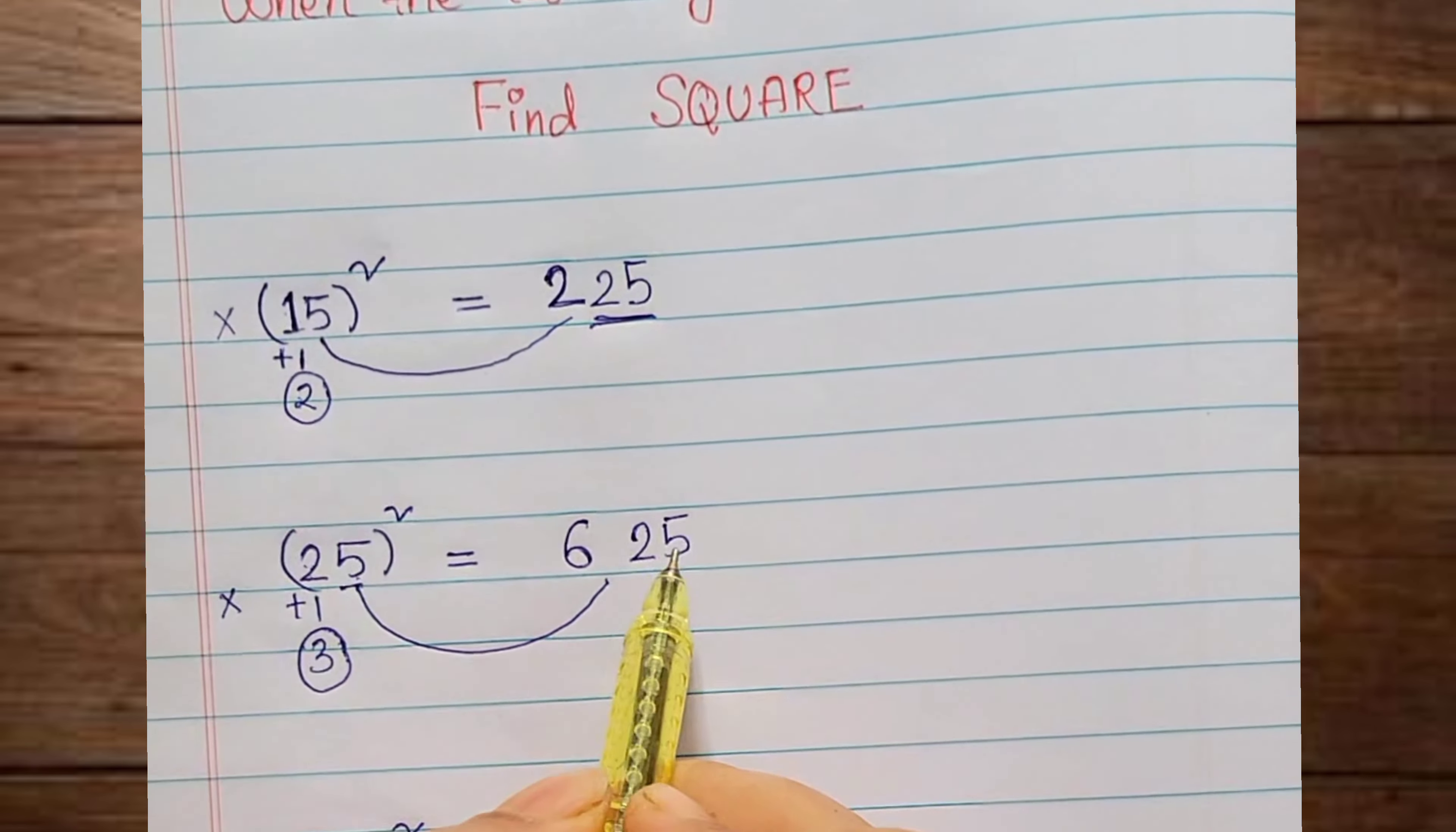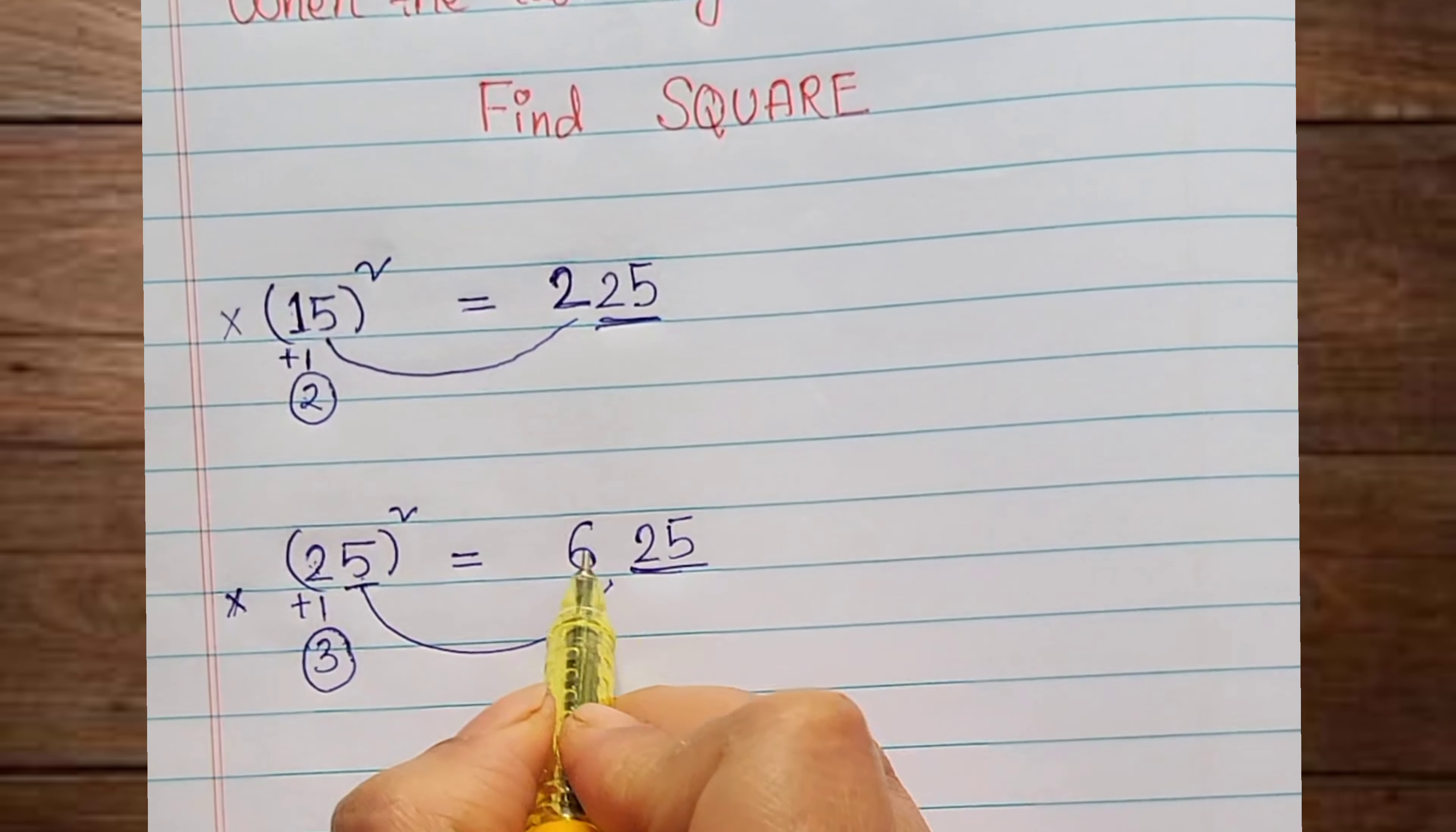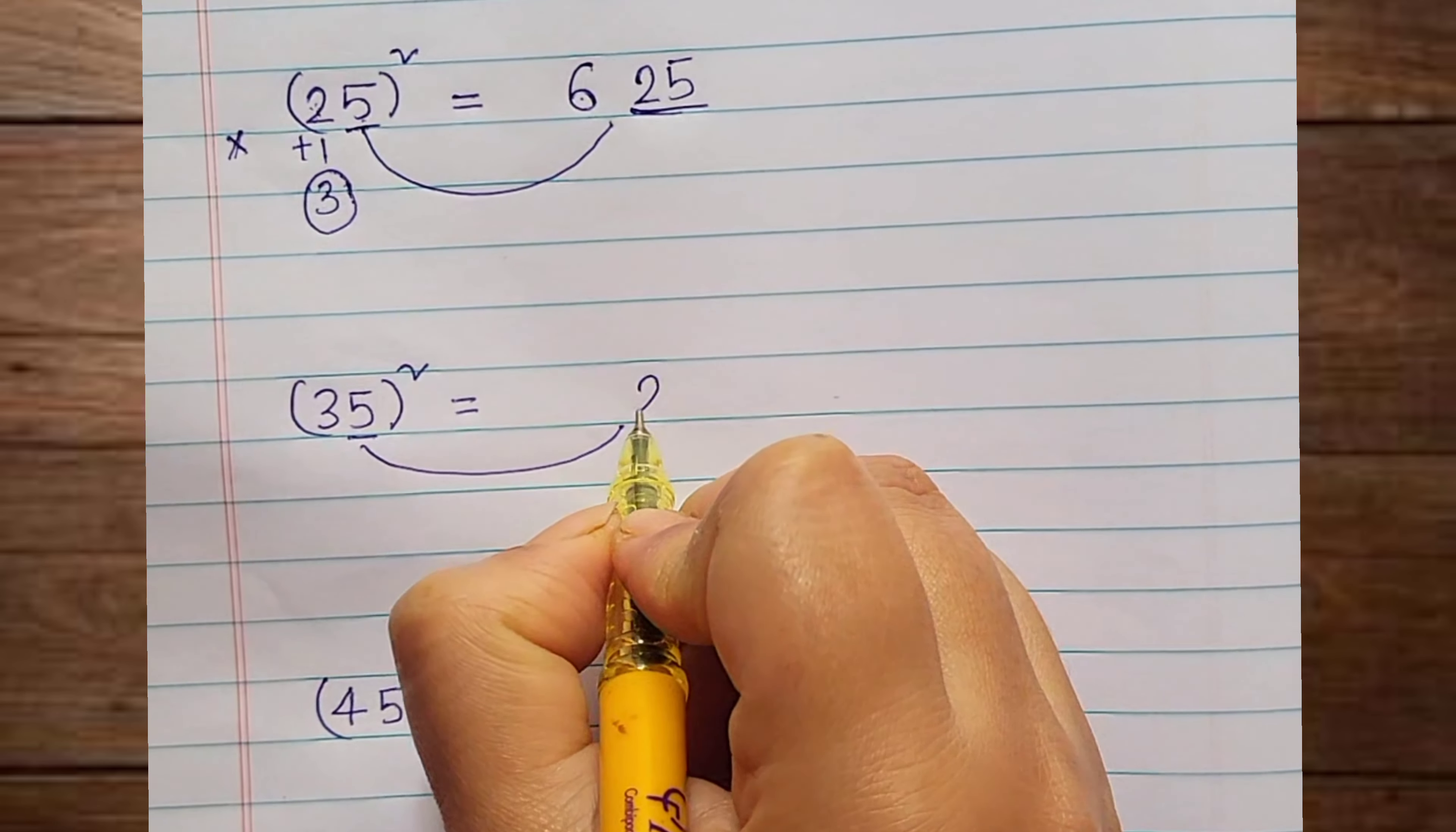225. Next one is similar. 5 squared we can write 25, and 2 plus 1 is 3. We can multiply 3 into 2, it is 6.